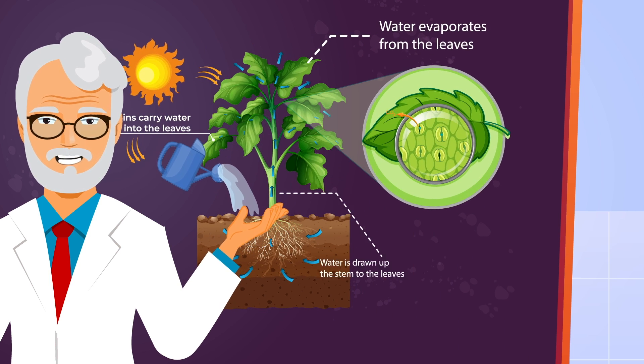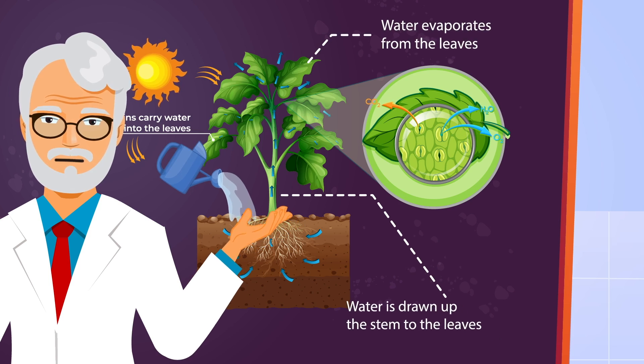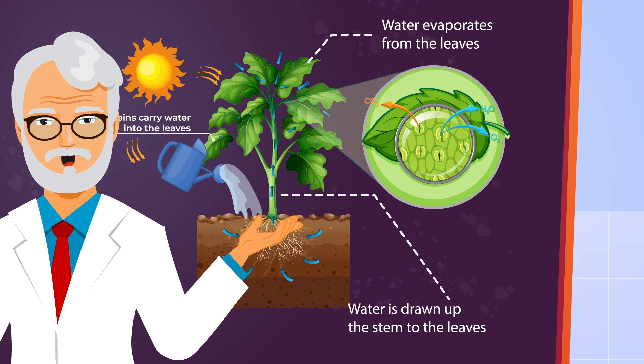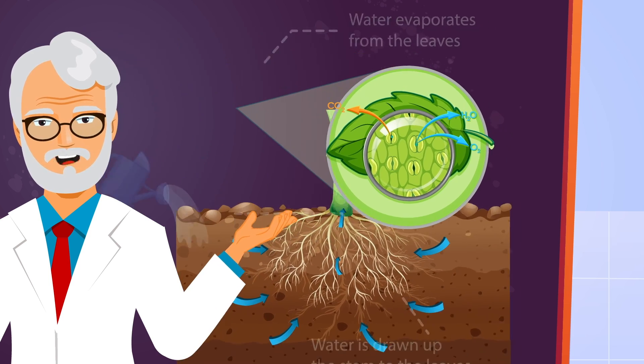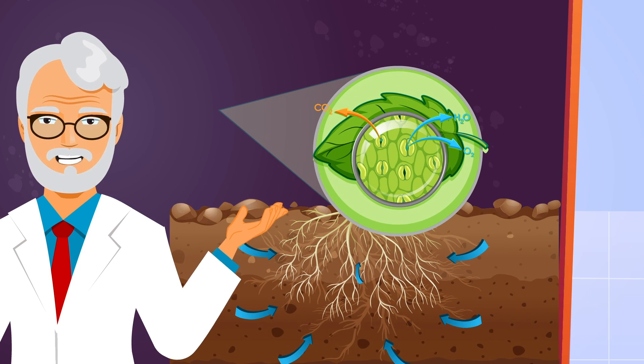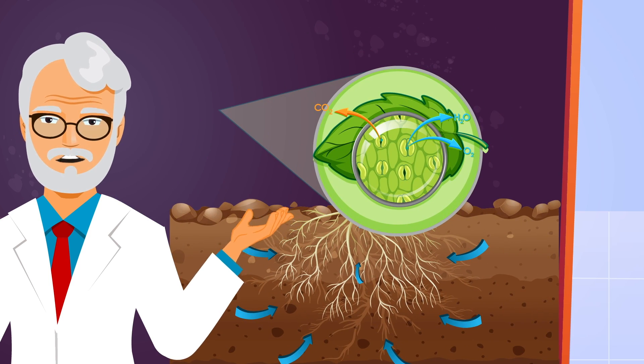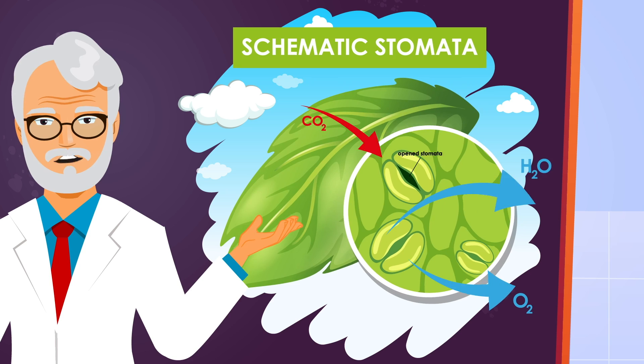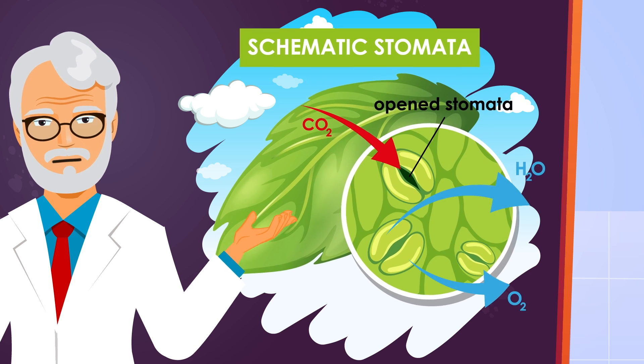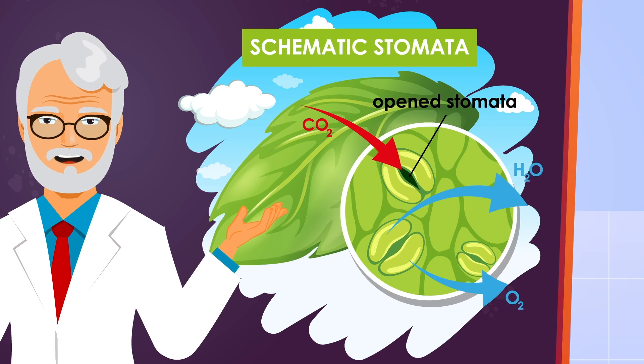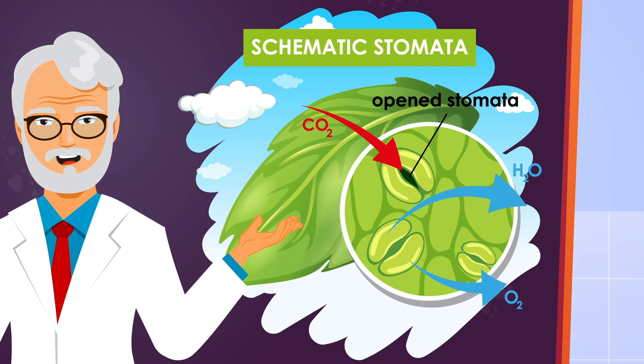One thing plants do not have is a heart for circulation, and they solely rely on evaporation. If there is no evaporation through the leaves, there cannot be any uptake through the root system.